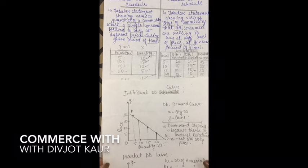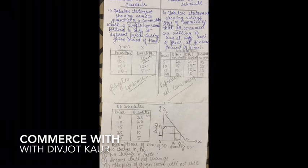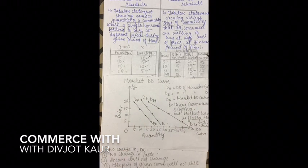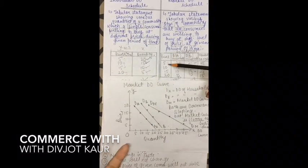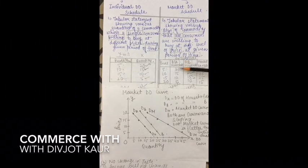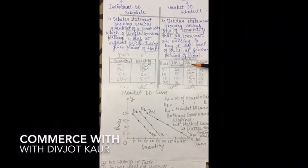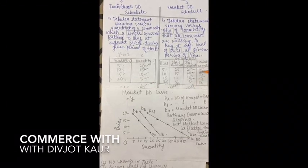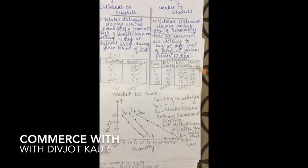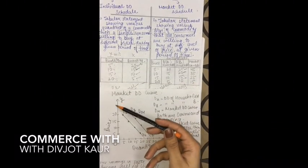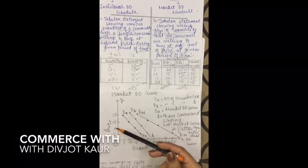Now for market demand curve: price is 5, 10, 15, 20. Quantity of household A is 20, 15, 10, 5 and quantity of household B is 25, 20, 15, 10. Market demand is 45, 35, 25, 15. I will plot household A's curve and household B's curve separately, then by adding both quantities I get the market demand curve. At price 5 the market demand is 45; at price 10 it is 35; at price 15 it is 25; at price 20 it is 15.